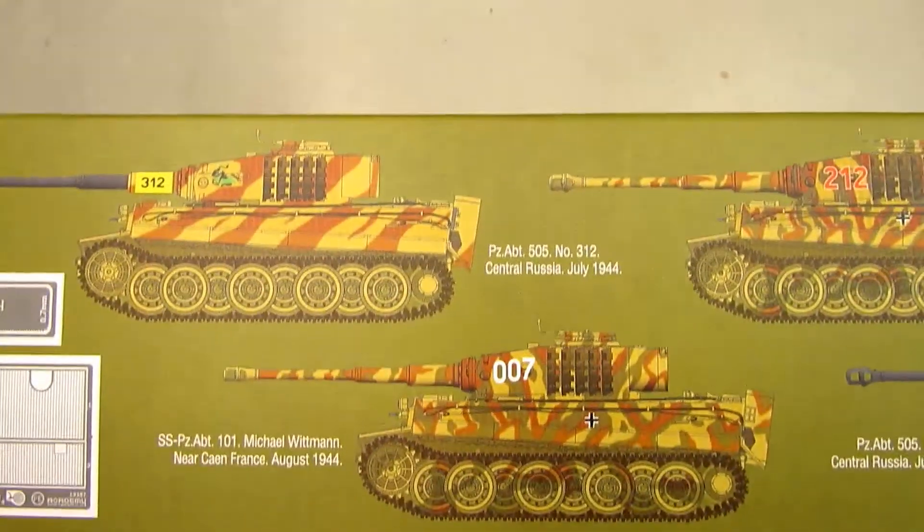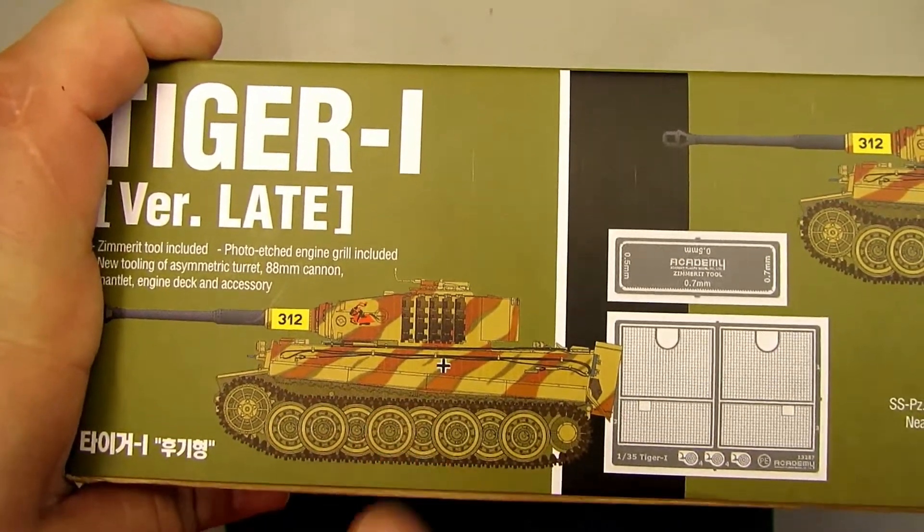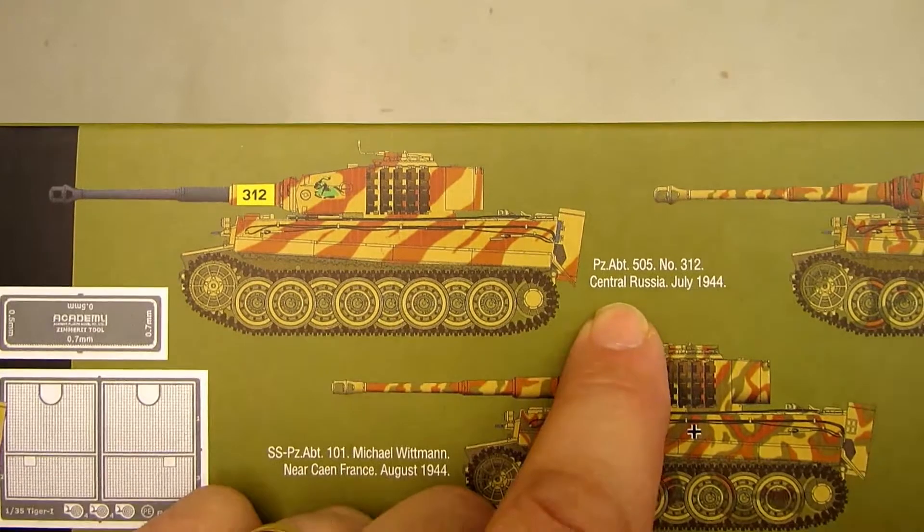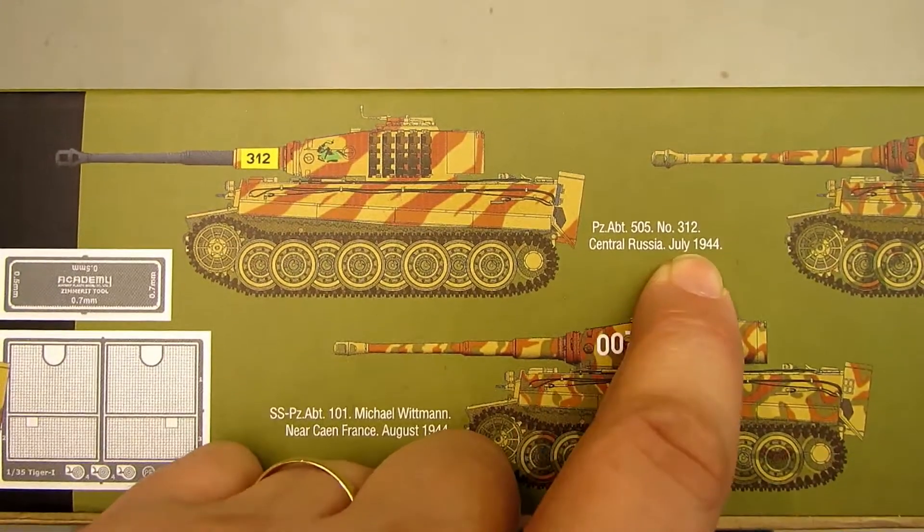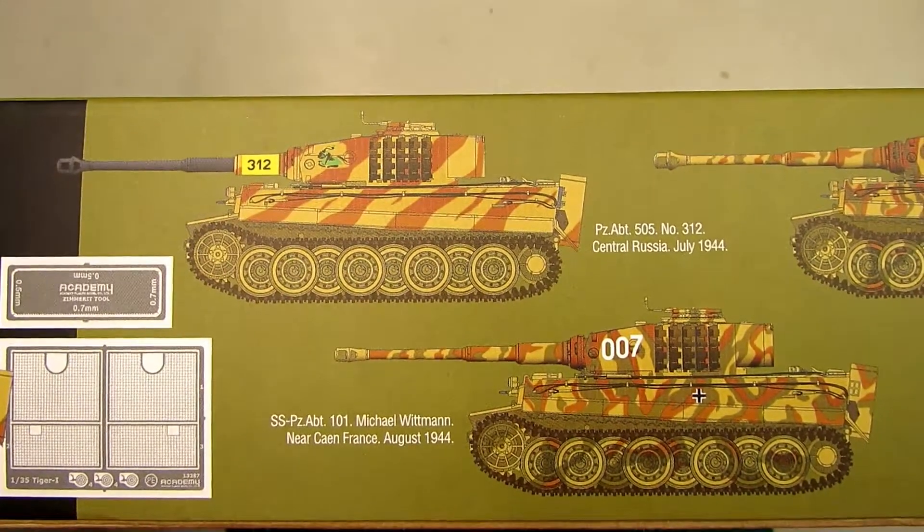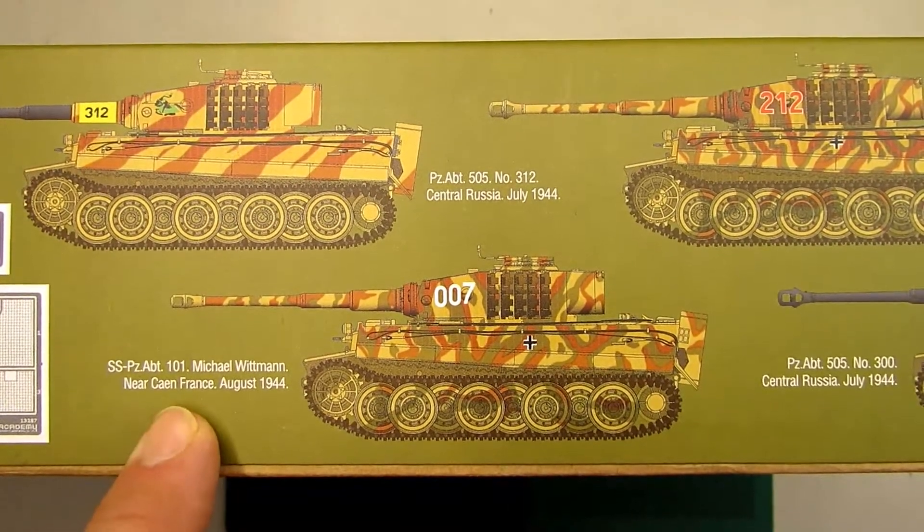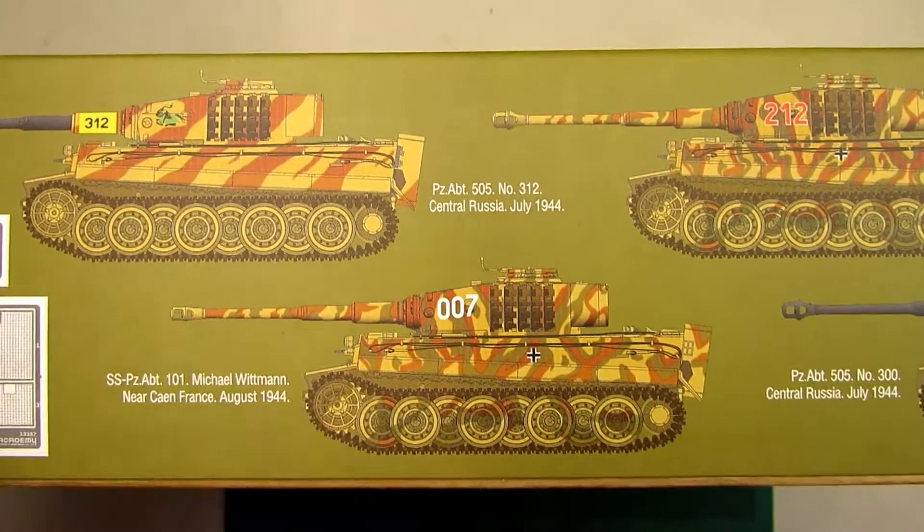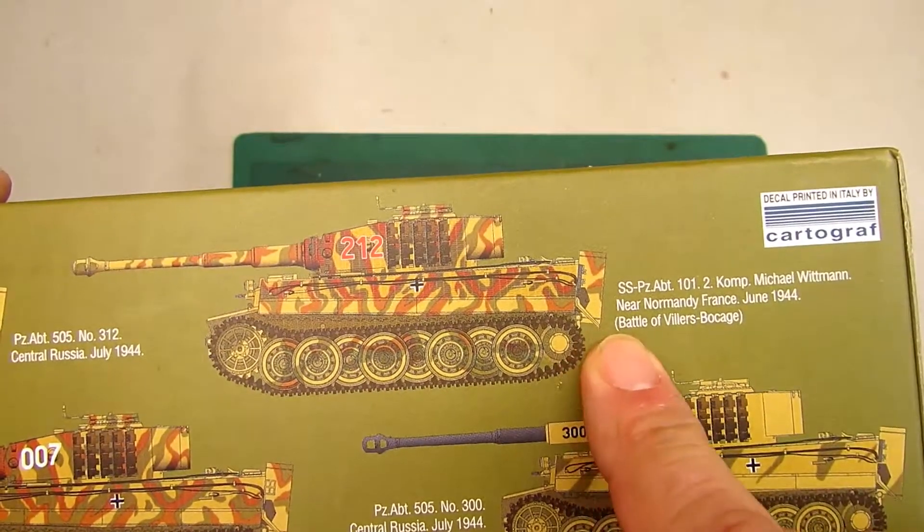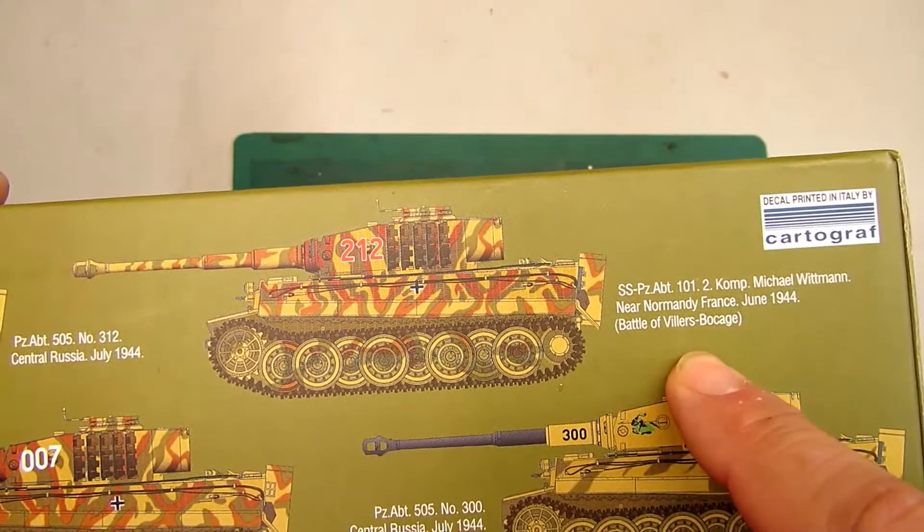This is the 1:35 scale Tiger 1 late version. You all know this version of the 312. There are lots and lots of other models to do. This is from Central Russia in July 1944, the famous 312. We got Michael Wittmann's version near Caen, France in August 1944.